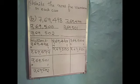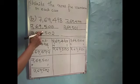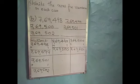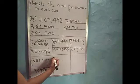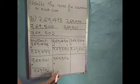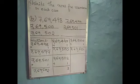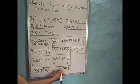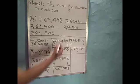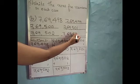Next: we should add 1 to this number to get the next number. So I will write here 7,69,502. After that I will add 1: 2 plus 1 is 3. Write remaining numbers as it is: 0, 5, 9, 6 and 7. So the next number is 7,69,503.